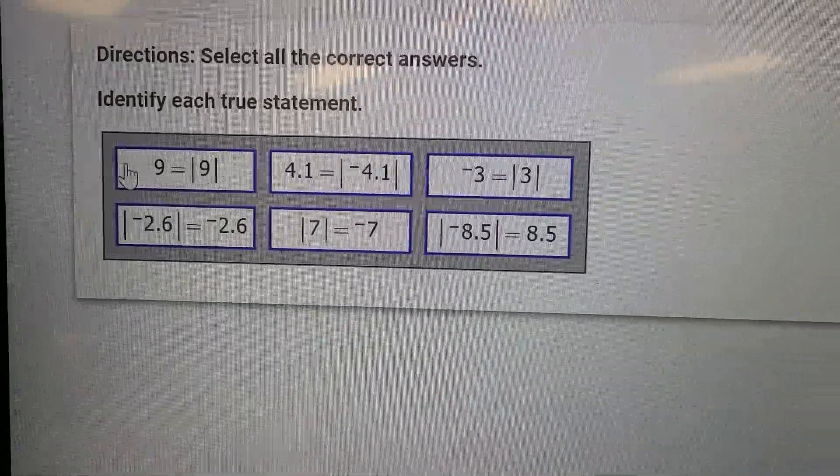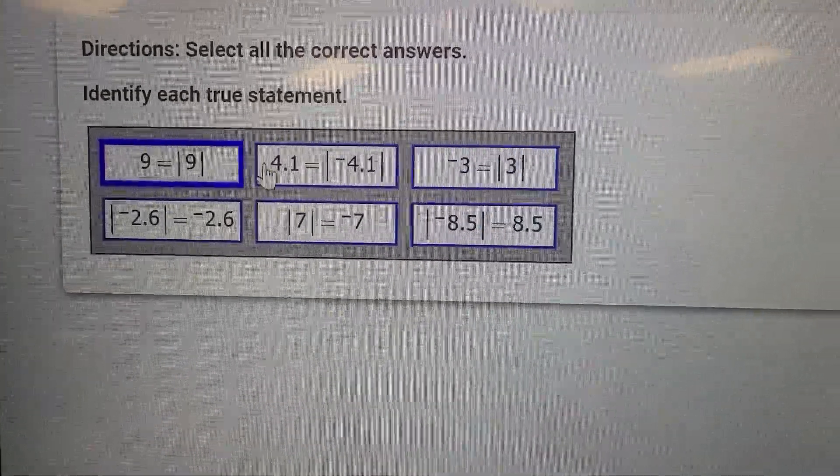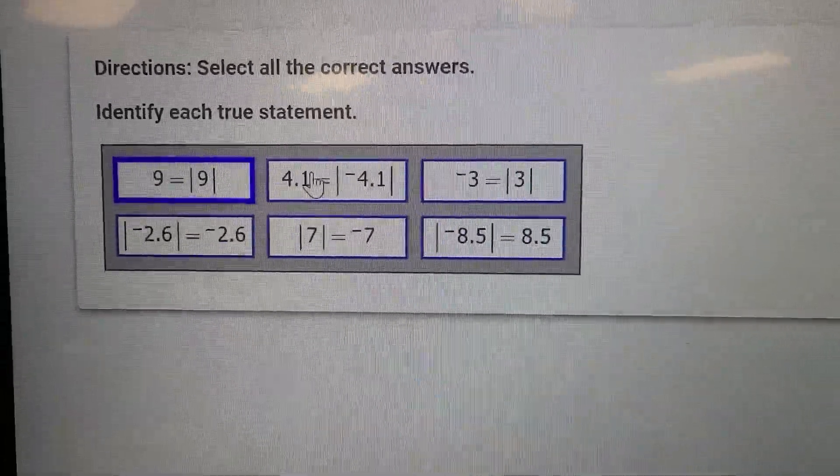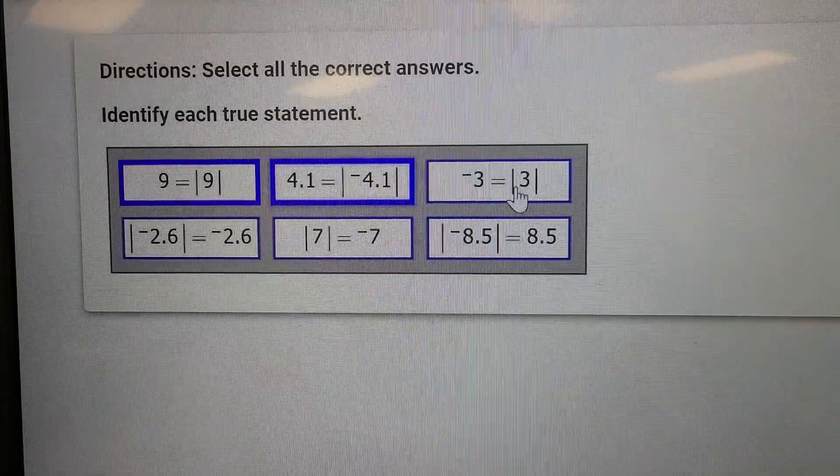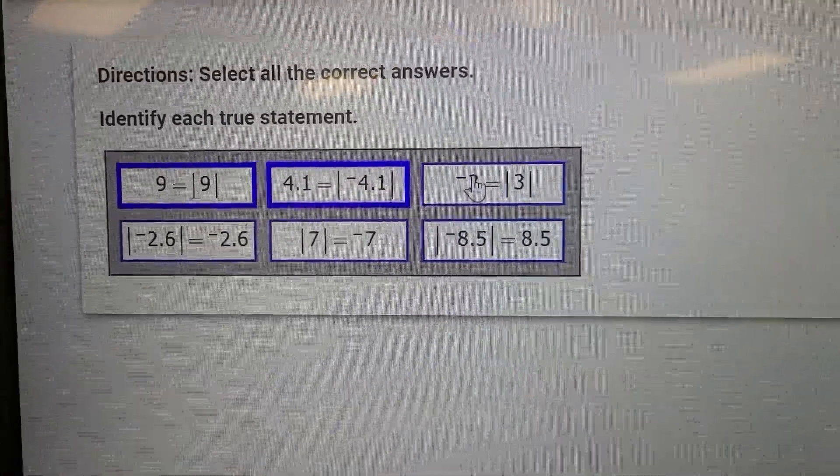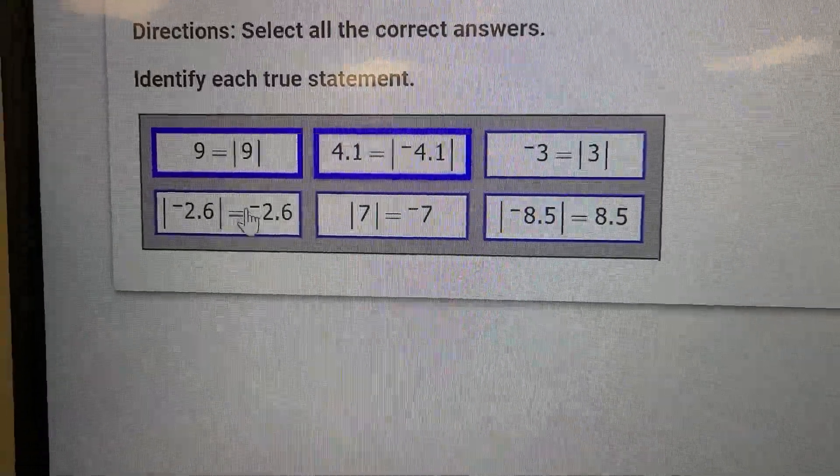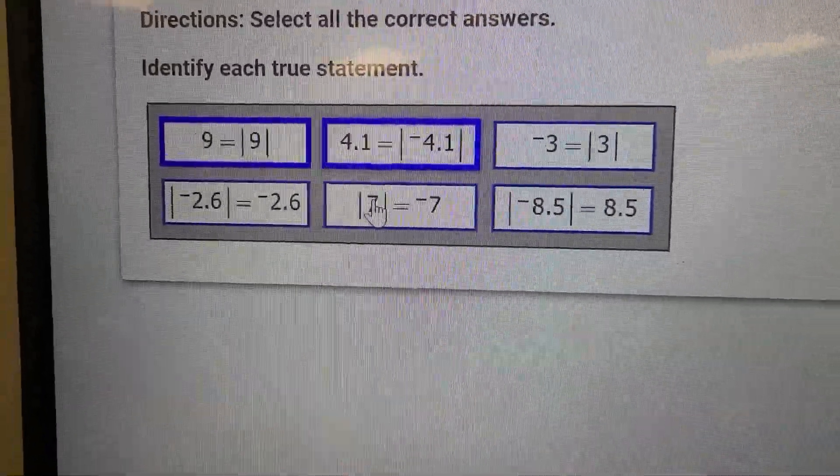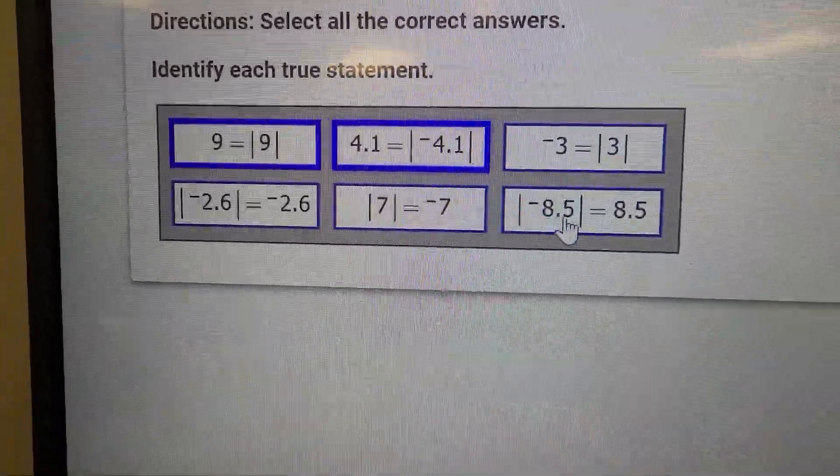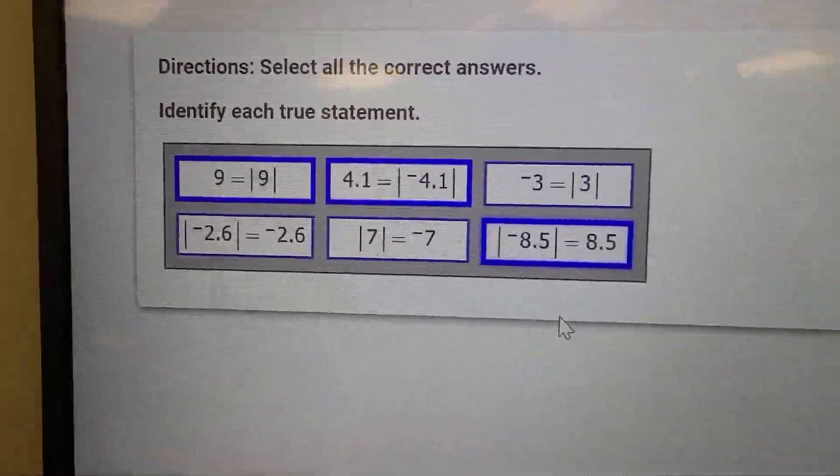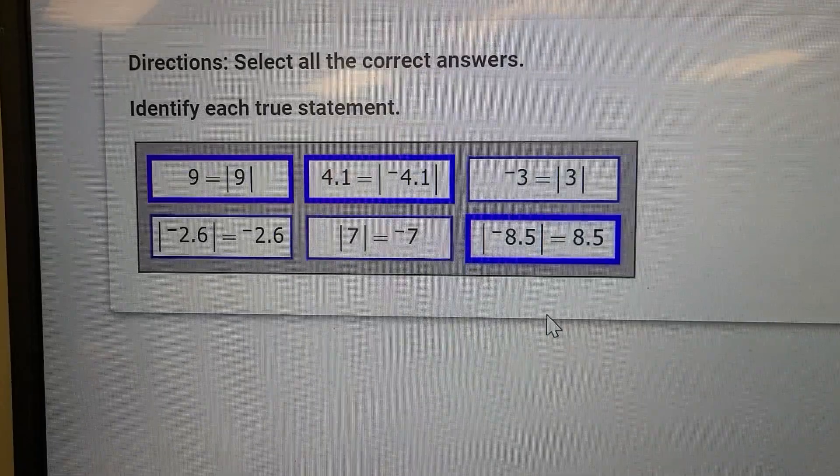Directions: select all the correct answers. Identify each true statement. I don't need scrap paper; you don't always need scrap paper. The absolute value of 9 is 9, that works. The absolute value of -4.1 is positive 4.1, that works. The absolute value of 3 is -3, that can't happen, skip it. The absolute value of -2.6 is -2.6, no. The absolute value of 7 is -7, no. The absolute value of -8.5 is positive, we like it.